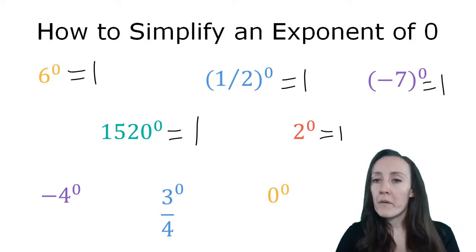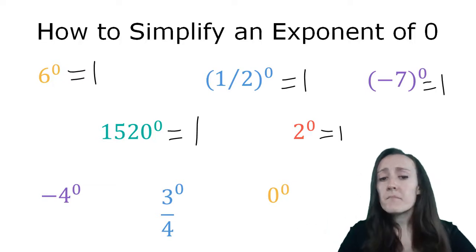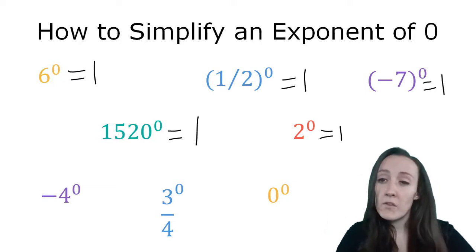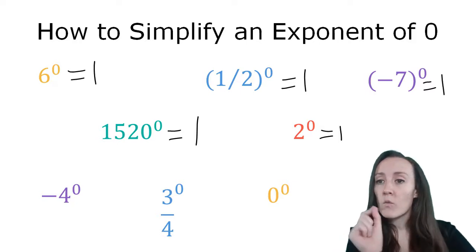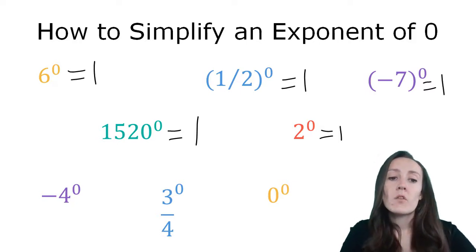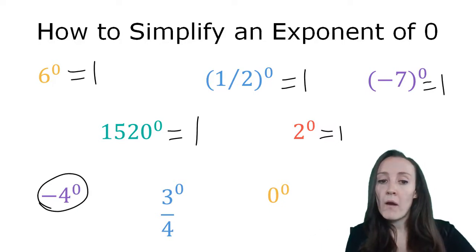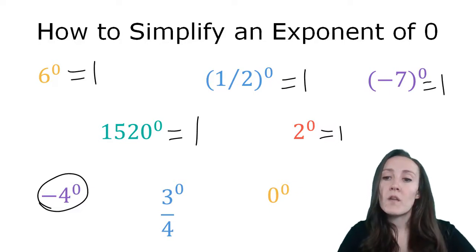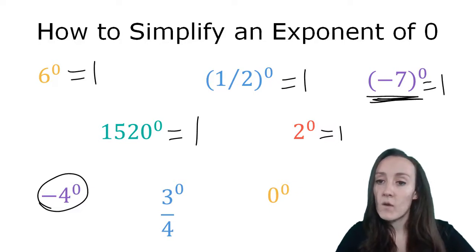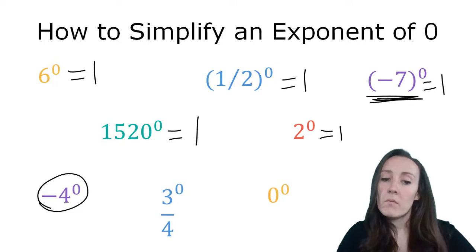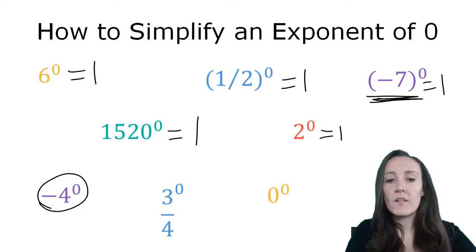Or just ordinary whole numbers — like the number two raised to a zero power — it's always going to equal one. The only thing you have to watch out for is paying attention to what the zero power is applying to. So in a problem like this, if you have negative four raised to the zero power, the zero actually only applies to the four, because the negative sign was not included in parentheses like it was up here. So in this problem you would say four to the zero power equals one, and then when you apply the negative sign to it, the answer would be negative one.